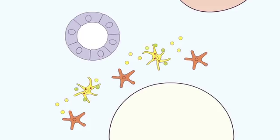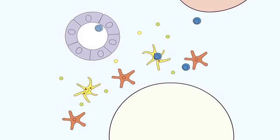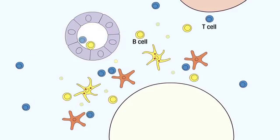The dendritic cells also secrete SLC and a second chemokine, MIP3-beta. This combination of chemokines attracts both T- and B-cells into the lymph node.